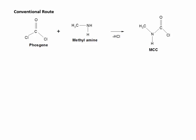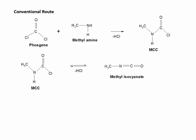MCC is also known as methyl carbonyl chloride. It undergoes rearrangement: the lone pair on the nitrogen attacks the carbon, Cl minus is eliminated, and the negatively charged chlorine attacks the hydrogen while the lone pair of nitrogen is retained. HCl is eliminated and we get methyl isocyanate — the gas responsible for the Bhopal gas tragedy.